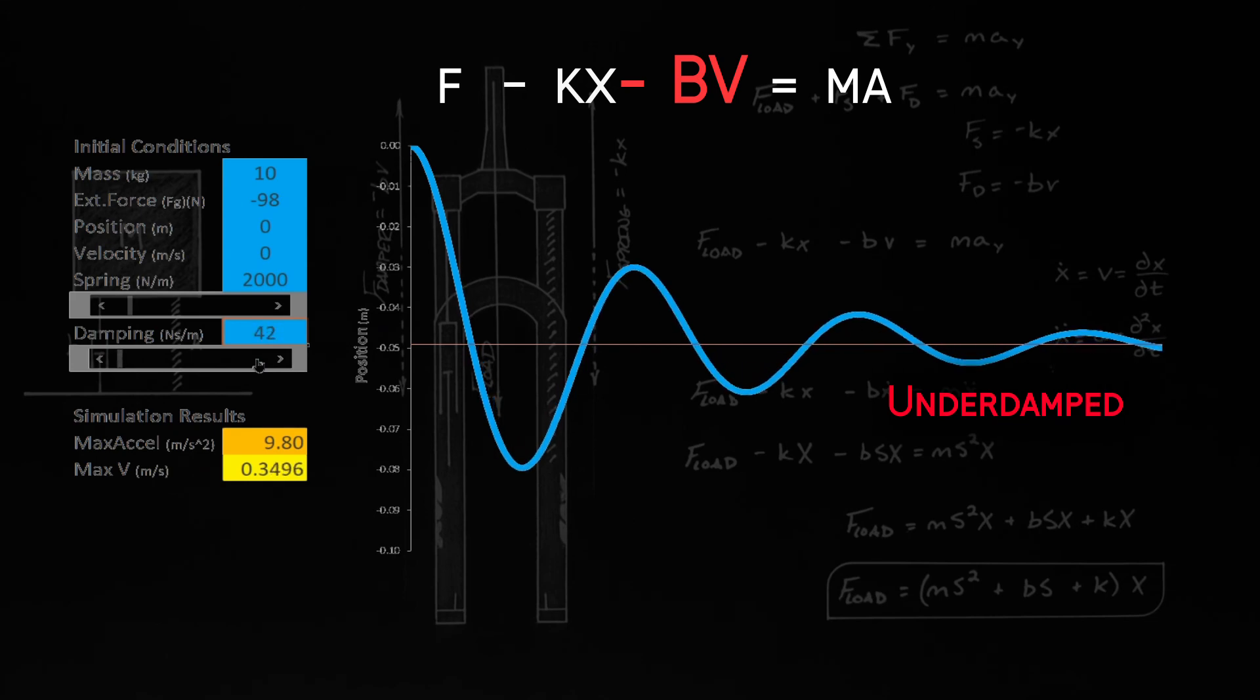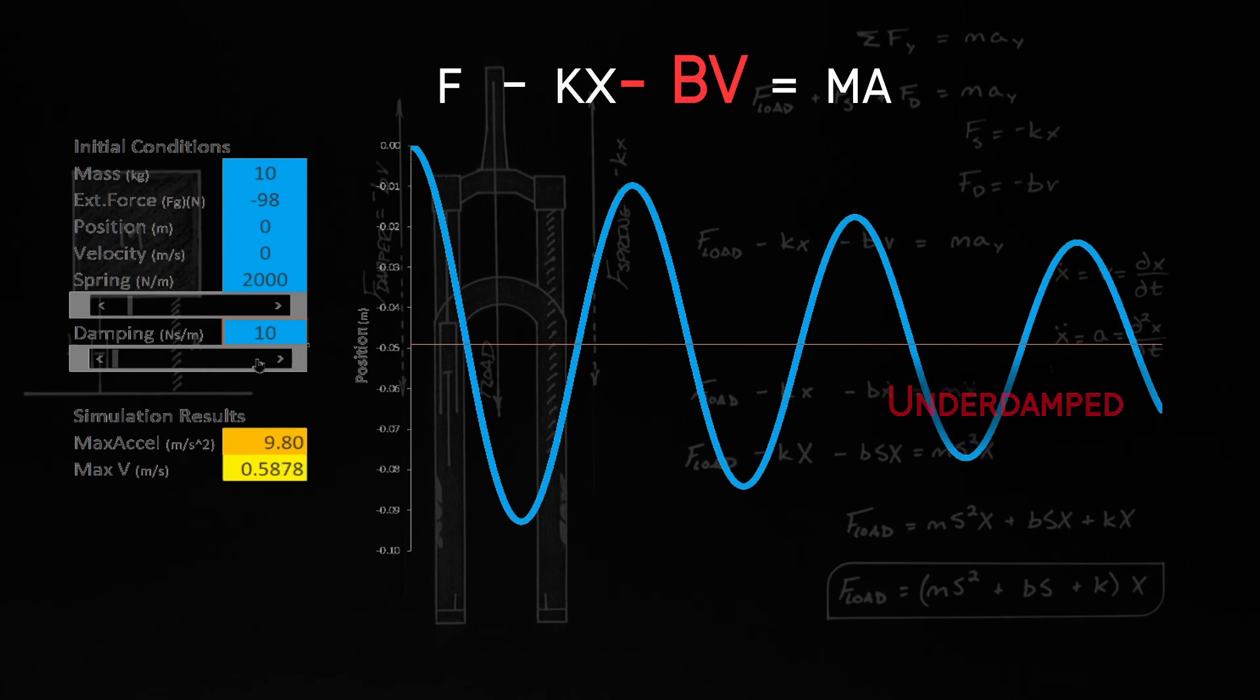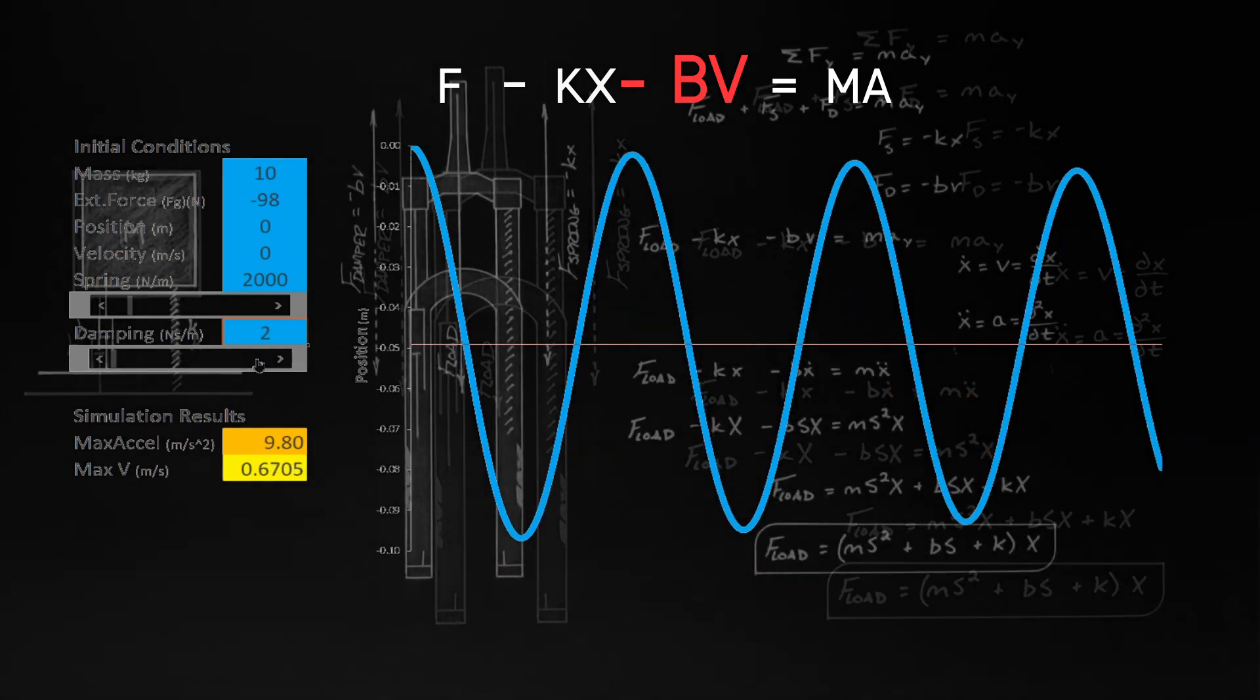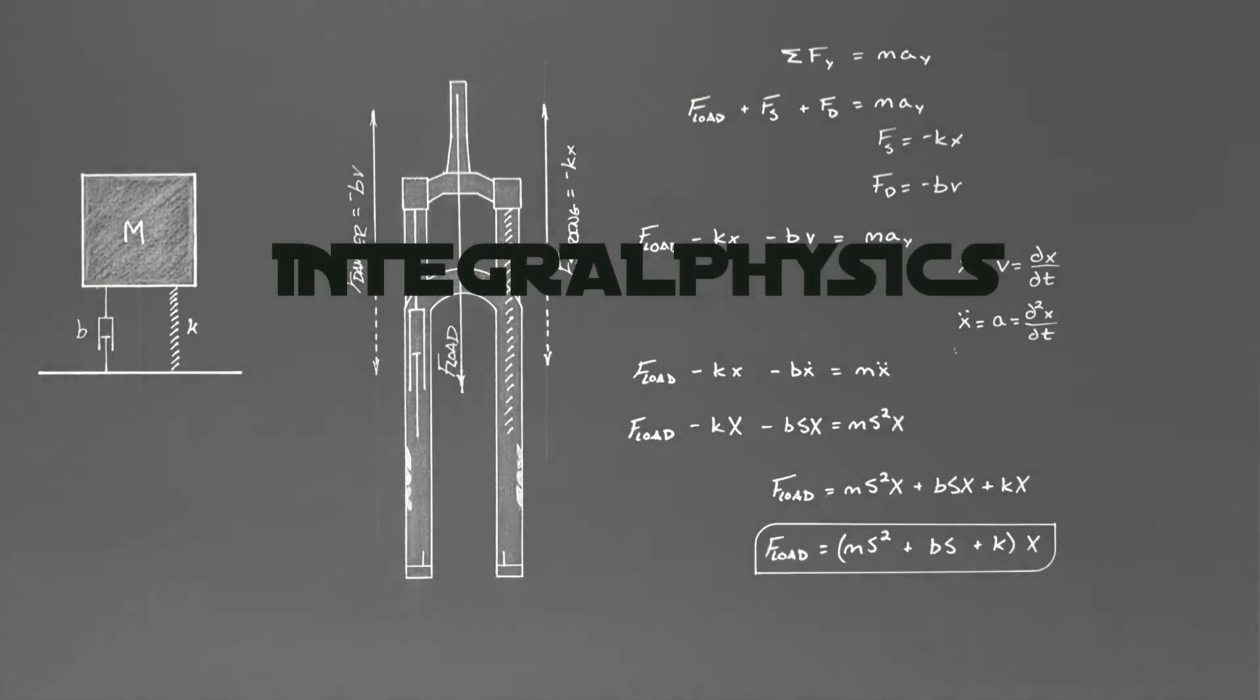And this leads us to the transition from what we call an underdamped to an overdamped system, or what we call critical damping. Now there's quite a bit to discuss with under versus overdamped systems, so we're going to save that for another day. So this has been the equation of motion for a mass-spring-damper system, and on that note, that's all for now.